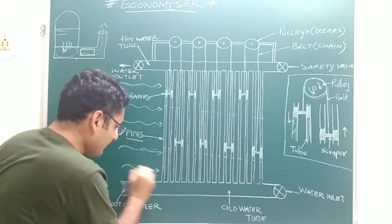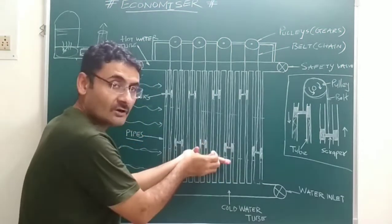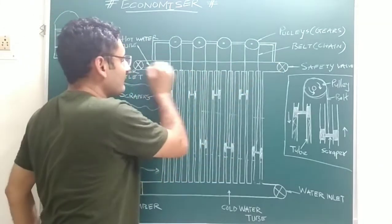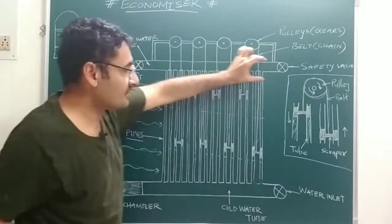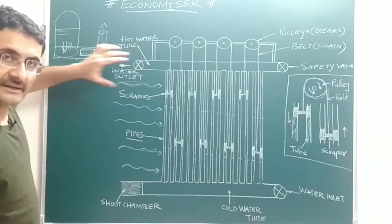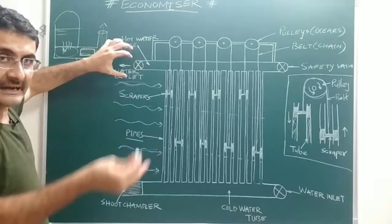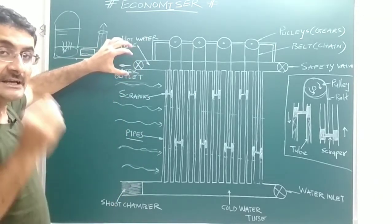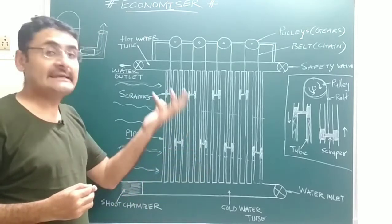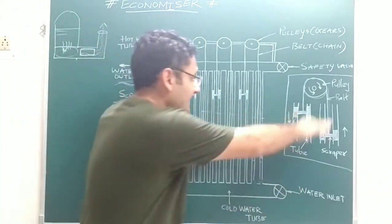The supply of cold water is continuous, so again cold water fills the tubes. Hot fuel gases pass again, the cold water converts into hot water again, its density decreases, and it moves upward. That hot water enters the hot water tube. The hot water is then supplied to the boiler through the water outlet. Inside the boiler, hot water is now being supplied, so less amount of fuel is required to convert it into steam, meaning you are saving fuel and increasing efficiency.